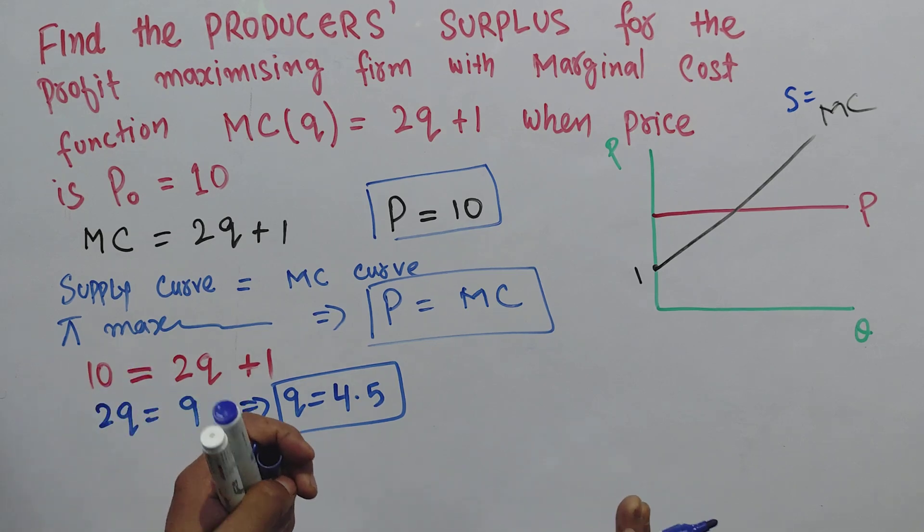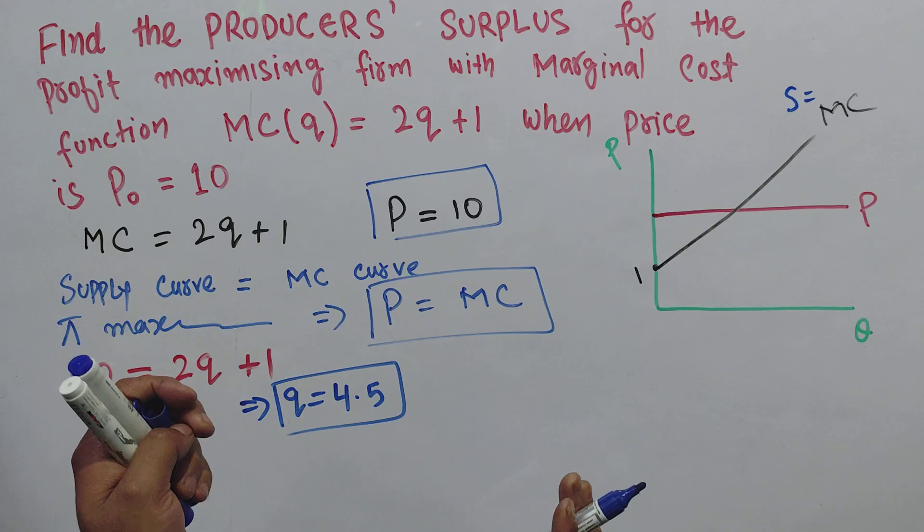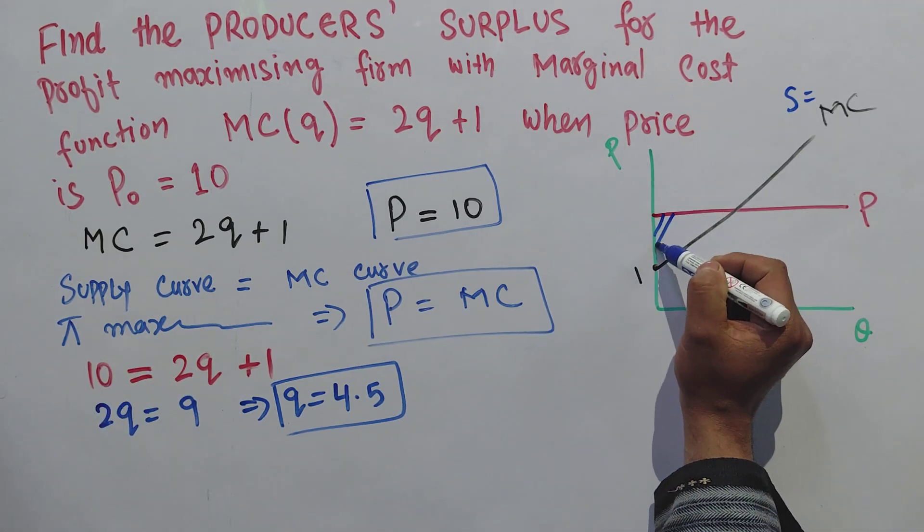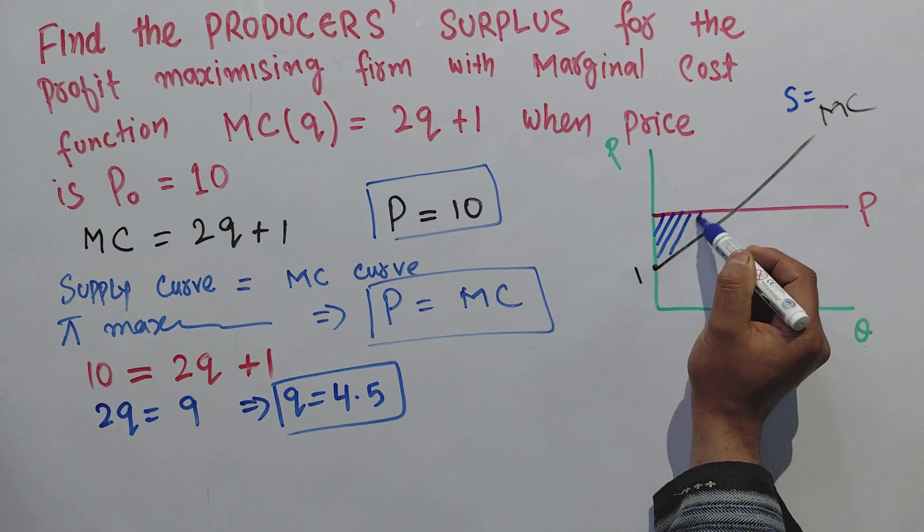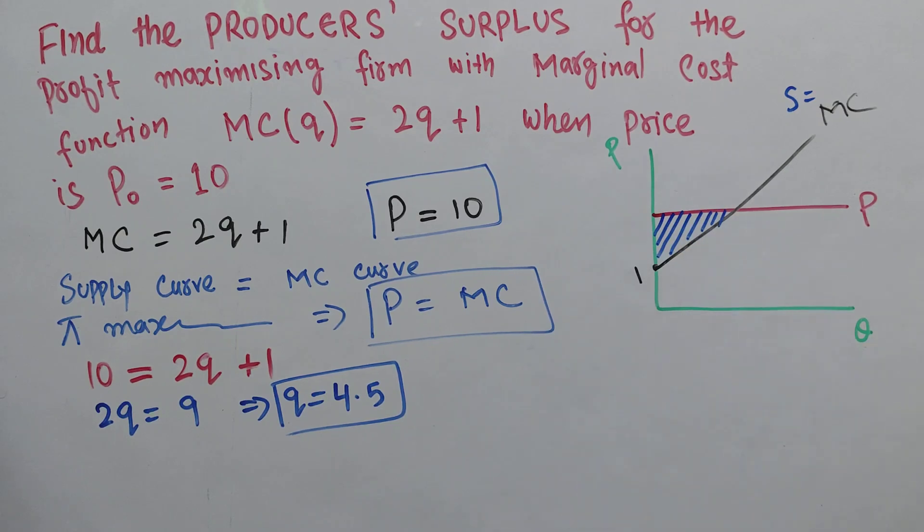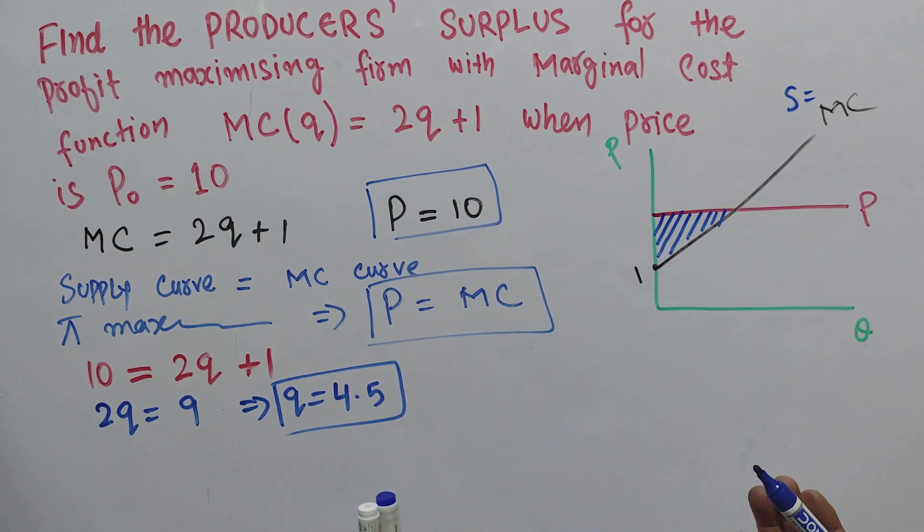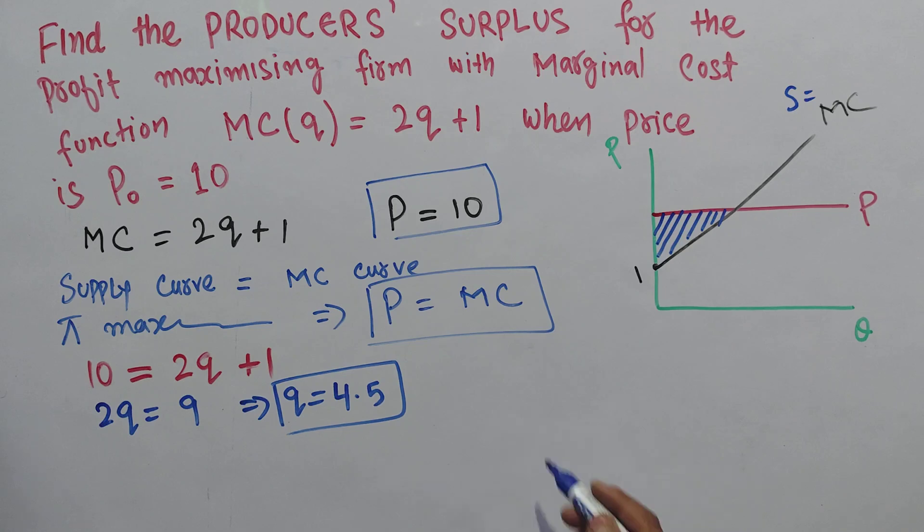Now what is the producer surplus? It is simply the area which is above the supply curve and below the market price—the area between these two lines. This area, which is above the supply function and below the market price, gives us the producer surplus. The producer surplus will be the area of this right angle triangle.